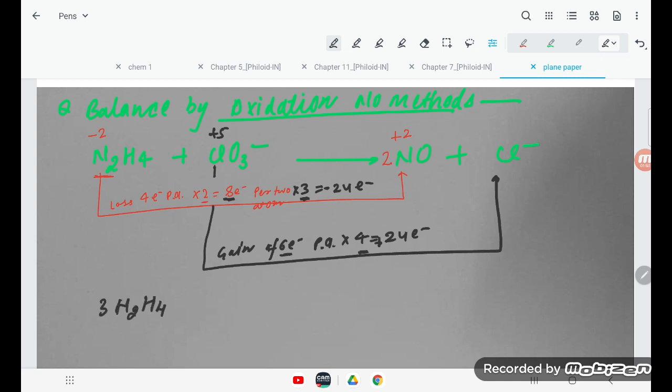So you just make it equal. Here, 3, multiplying this one, so 3 N2H4. Now the second condition you see, CLO3, you are multiplying by 4, so here is 4 CLO3 minus. Here you see, 3 times 2 is 6, NO. This is 6 NO plus. Here the Cl is there, and you are multiplying by 4, so 4 Cl minus.